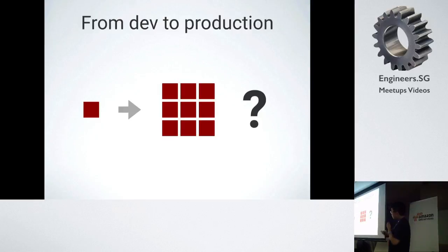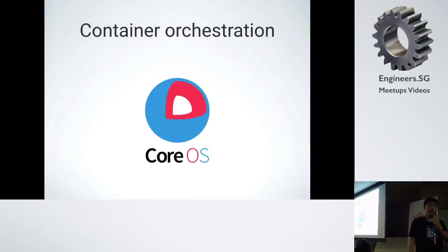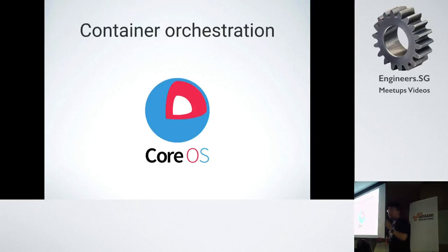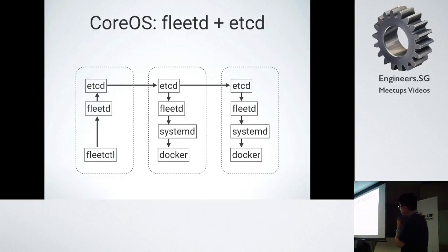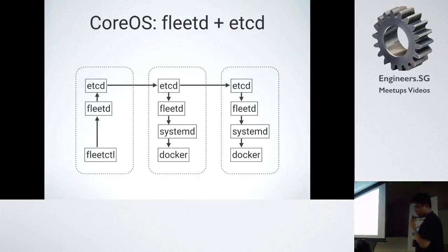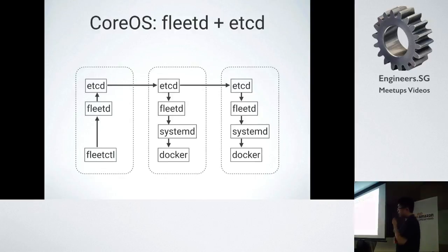There are several solutions. The one we use is CoreOS. CoreOS is a specialized distribution of Linux which primarily provides tools used for container orchestration. CoreOS comprises these particular tools: ETCD, Fleet, and SystemD. ETCD is used as a synchronization layer, and Fleet is used for orchestration — it provides commands to SystemD to run Docker containers, manage the container lifecycle, and so on.